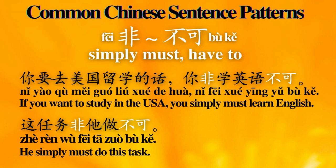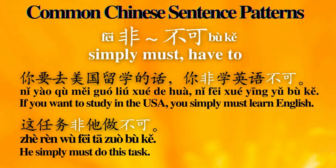Number 10: 非...不可 — 'Simply must.' Sentence examples: 你要去美国留学的话，你非学英语不可。 If you want to study in the USA, you simply must learn English. 这任务非他做不可。 He simply must do this task.